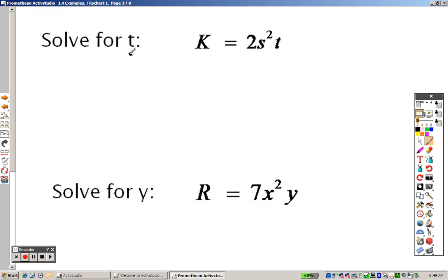With this one, it's saying solve for T. What that means is I want you to get T all by itself. Let me rewrite this for you. It's like saying 2 times S squared times T, right? It's all multiplication.